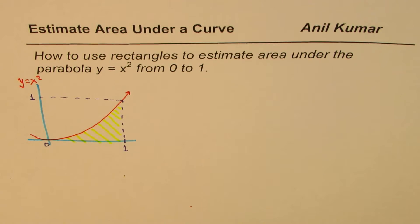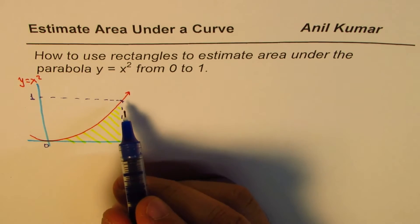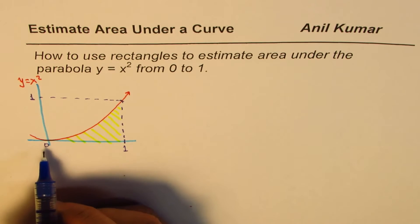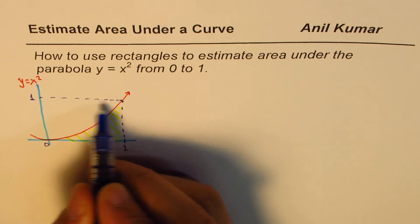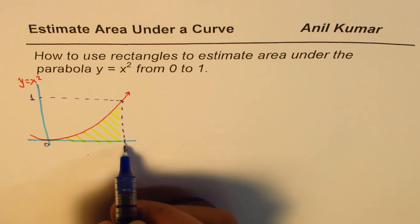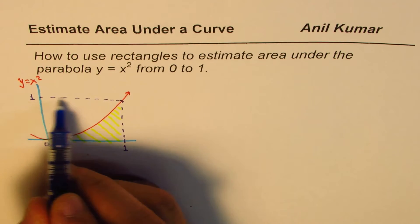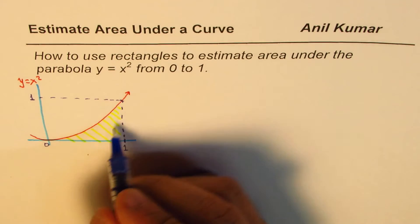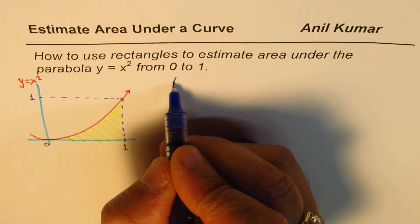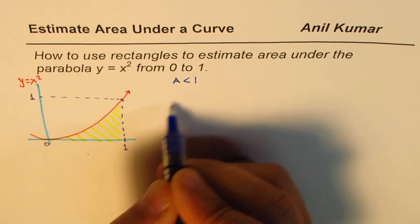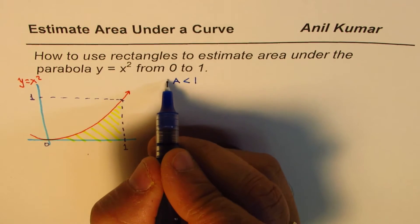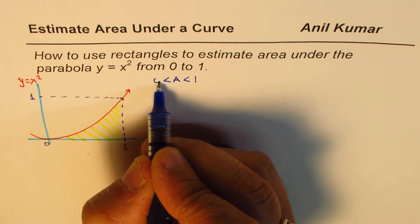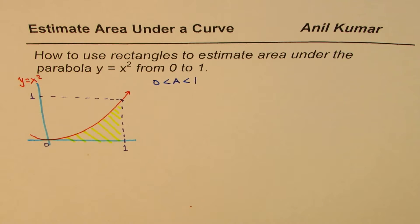Above the x-axis and under the curve — we want to estimate that area. To begin with, a rough estimate: this area is definitely less than the area of the big 1×1 rectangle, which is 1. So we can say the total area A is less than 1 and definitely greater than 0. That becomes our rough estimate.